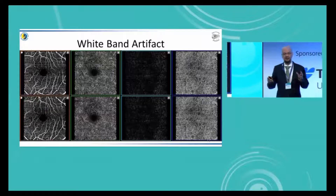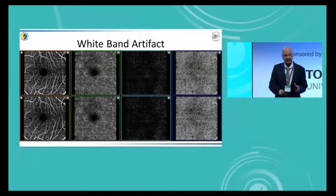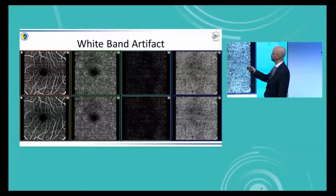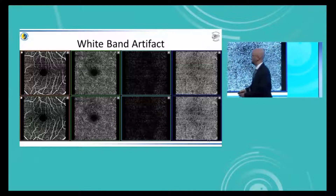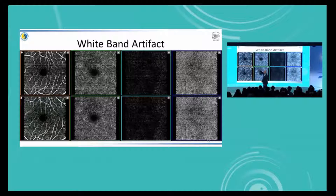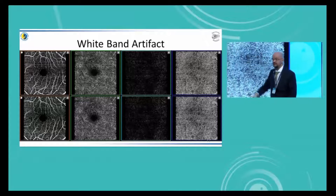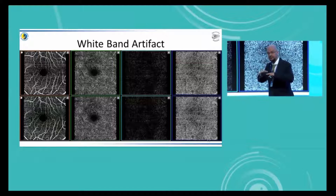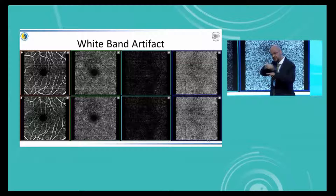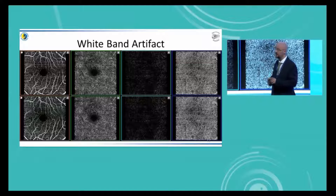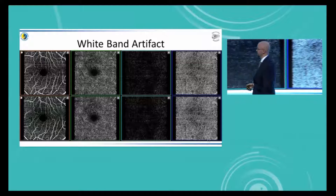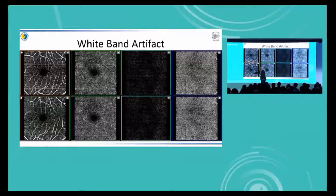Another type of artifact seen in OCT angiographies is the so-called white band artifact. You can see these little white bands going across the entire scan, following through all the different layers all the way down to the choriocapillaris. This is due to movement during the actual algorithm — between scans, the patient moved. Luckily, this is now very easily removed using software in post-processing, immediately eliminating these white band artifacts.